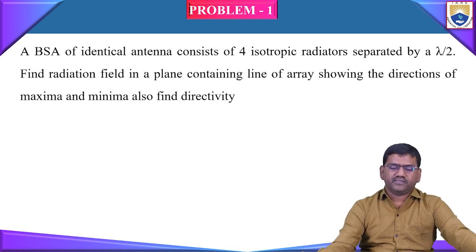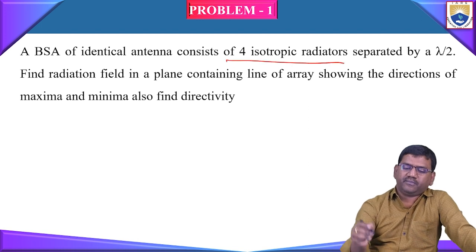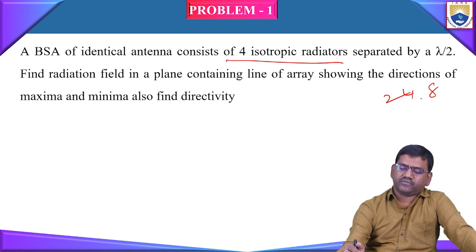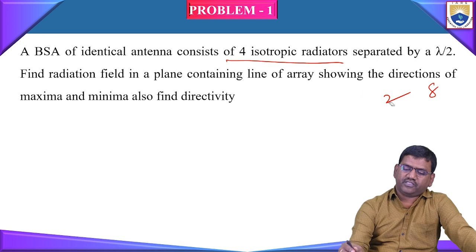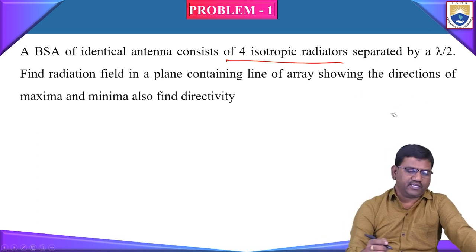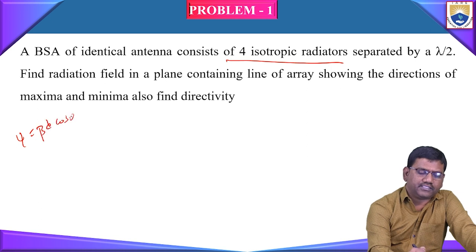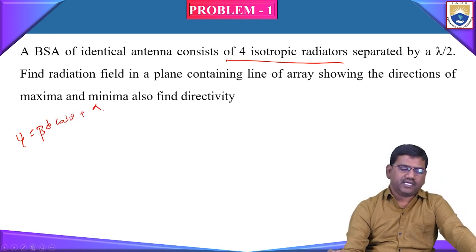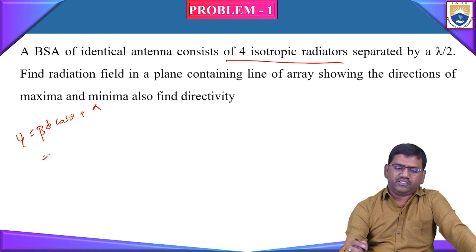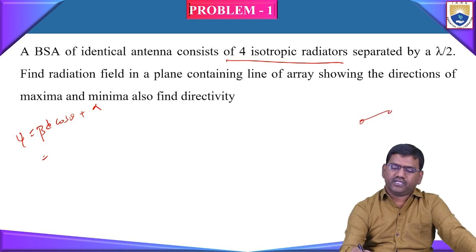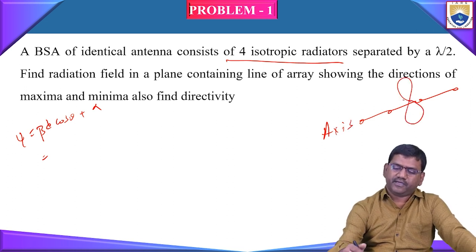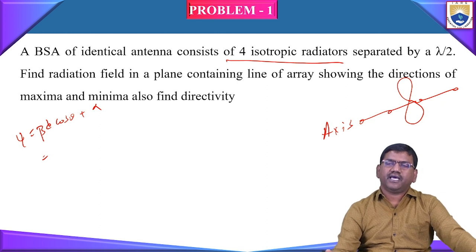Here the BSA consists of 4 isotropic radiators. It may be any number of radiators — 4, 8, or 2. The concept is the same; we need to find out the value of E. As per our previous theory, we know that psi is equal to beta*d*cos(theta) plus alpha. The broadside array is one where the radiation pattern is maximum perpendicular to the axis of the array. If there are 4 elements and we consider the axis, maximum radiation will be perpendicular to that axis.